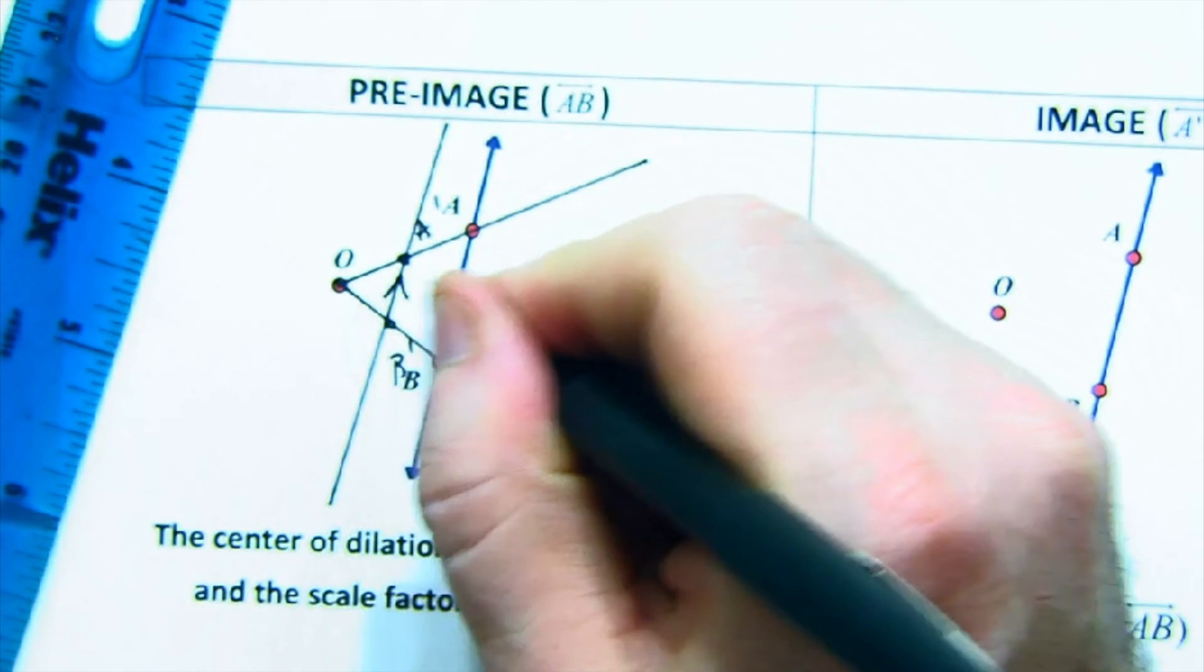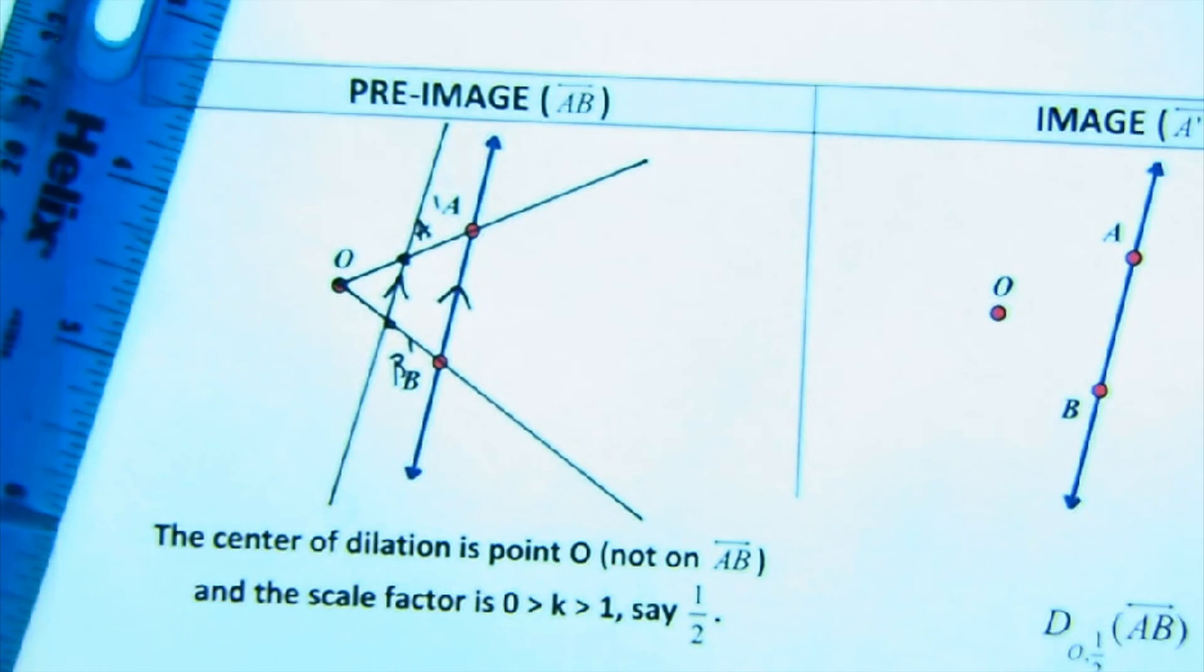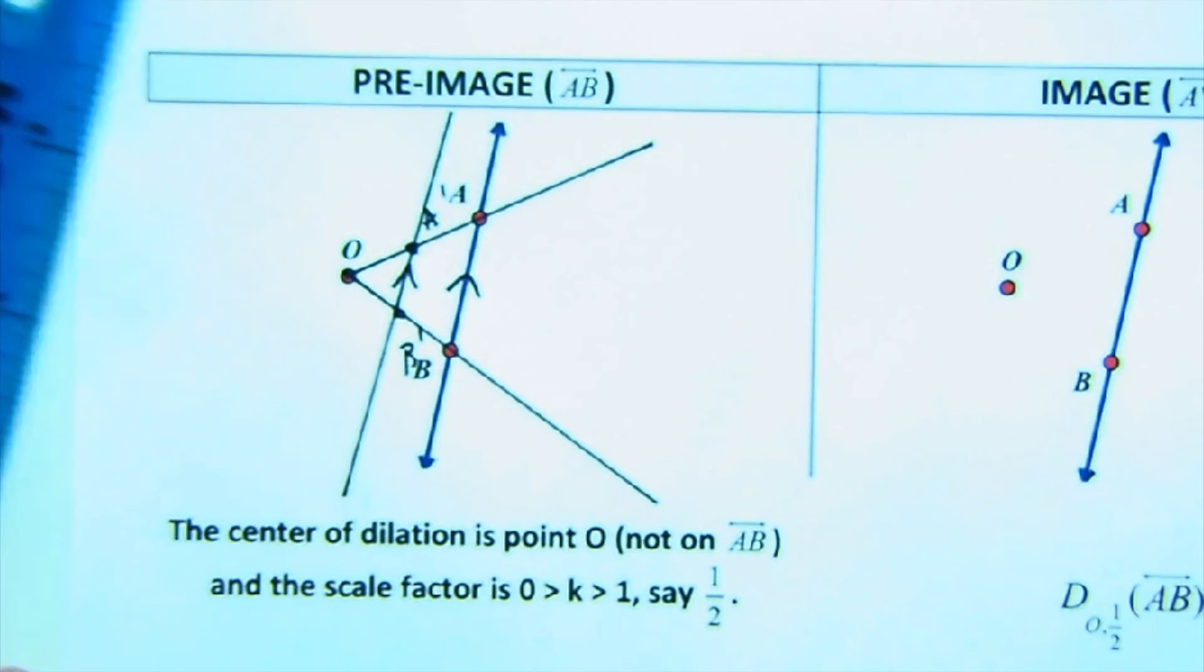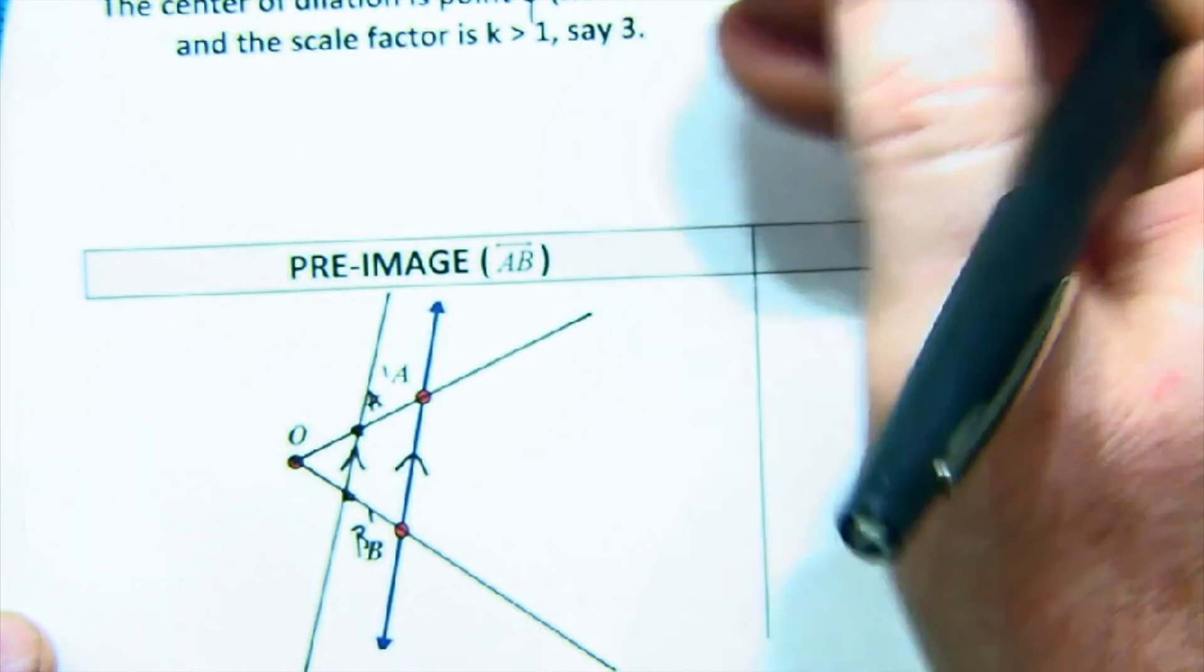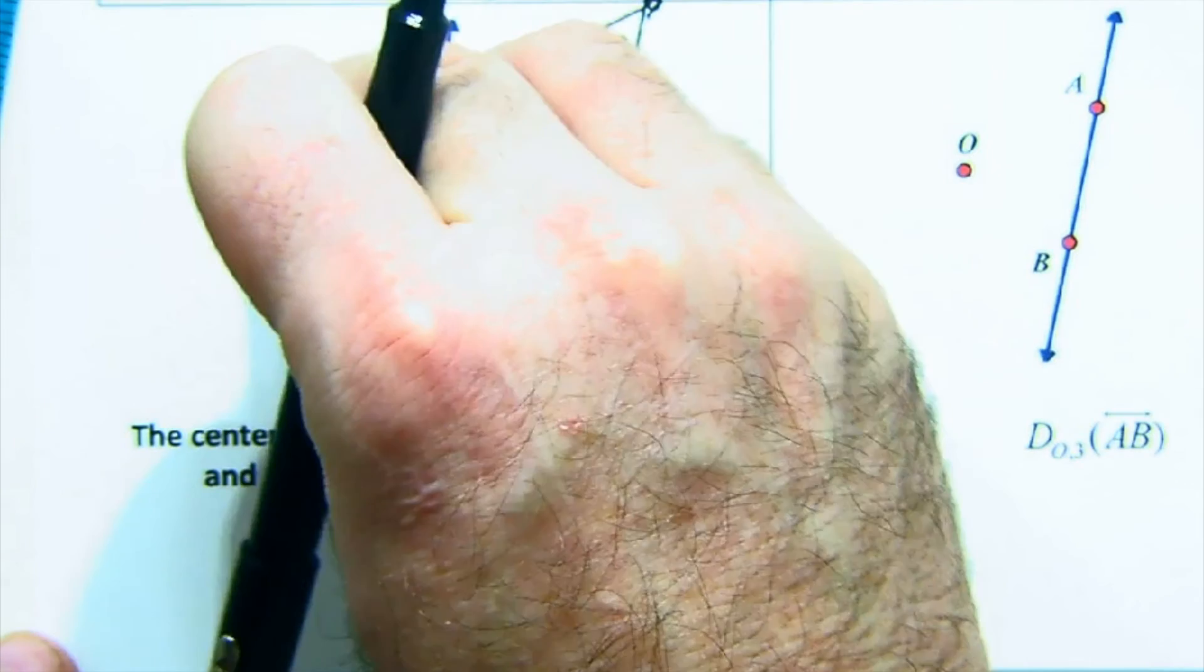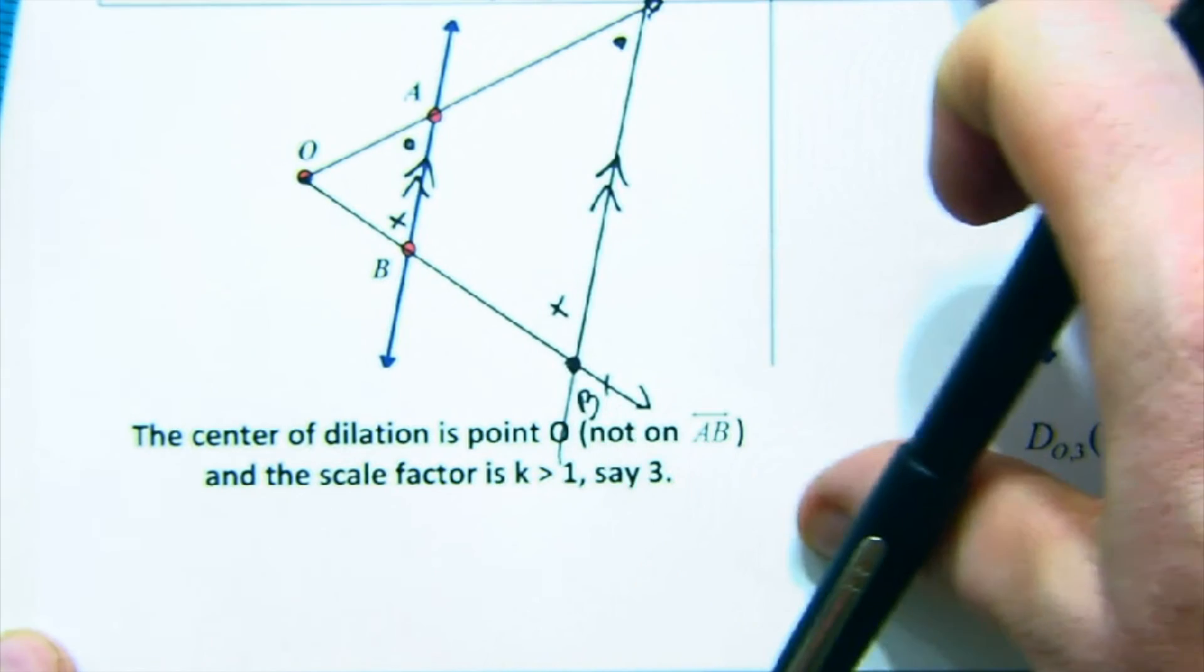And you would get a set of parallel lines there in terms of that creation. So the idea here is just mostly this idea of if you're on the line, you get the same line back. If you are off the line, the center is off the line like here, you send with scale factors that are like two or three, you send it further away.